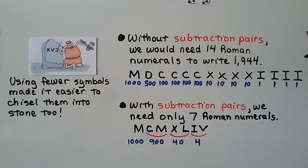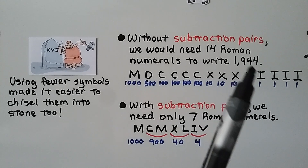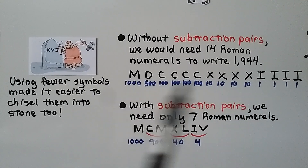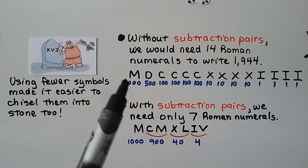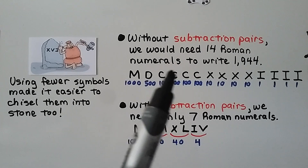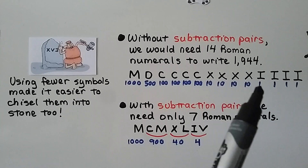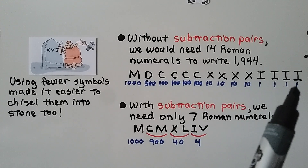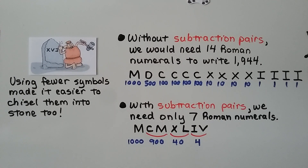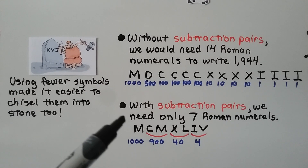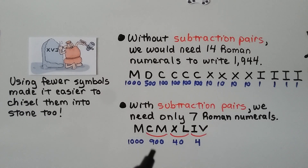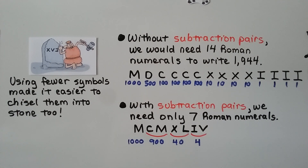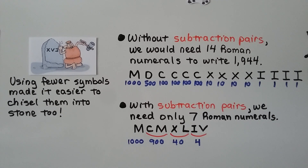Without subtraction pairs, we would need 14 Roman numerals to write 1,944. We'd write M for 1,000, D for 500, then CCCC for four 100s, then four tens, and then four ones — that's 14 Roman numerals. With subtraction pairs, we need only 7: M for 1,000, then CM for 900 (1,000 minus 100), then XL for 40 (50 minus 10), and then IV for 4 (5 minus 1). That makes 1,944, and using fewer symbols also made it easier to chisel them into stone.